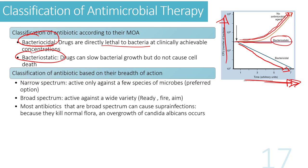Bacteriostatic drugs keep the number of bacteria static — they don't directly kill them but stop them from growing, so the count neither goes up nor goes down. The hope is that with bacteriostatic antimicrobials, the immune system will directly help to eliminate the bacteria. Bactericidal drugs are lethal to bacteria, whereas bacteriostatic drugs slow growth without causing direct death.